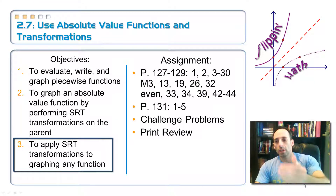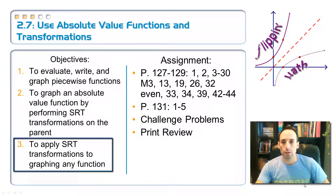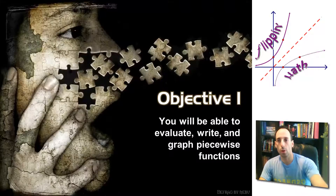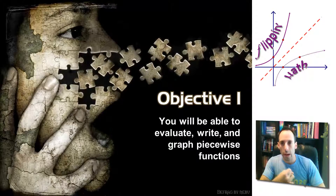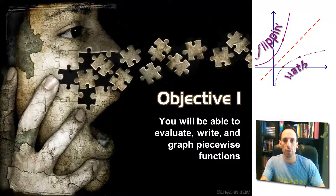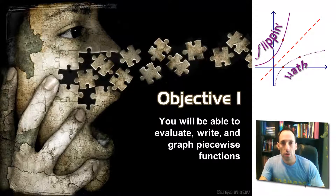And then finally, taking on objective three, those SRT transformations, and applying them to any kind of function — maybe even these piecewise functions we're talking about right here up front. So, objective one: we're talking about being able to evaluate, write, and graph these things called piecewise functions. Evaluate means I'm taking an x value, sticking it into the equation, and getting an answer. Writing the equation for it, and graphing the equation too.